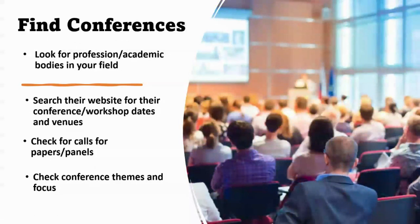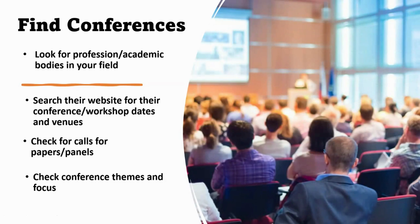So how do you find conferences in the first place? First, look for professional and academic bodies in your field. There are different bodies — for instance, in political science there are different academic associations. You can find them through a simple Google search. Then visit their websites and look for their workshops and conferences, the dates, and the venues. These bodies regularly hold conferences, workshops, and get-togethers, so check their websites frequently.